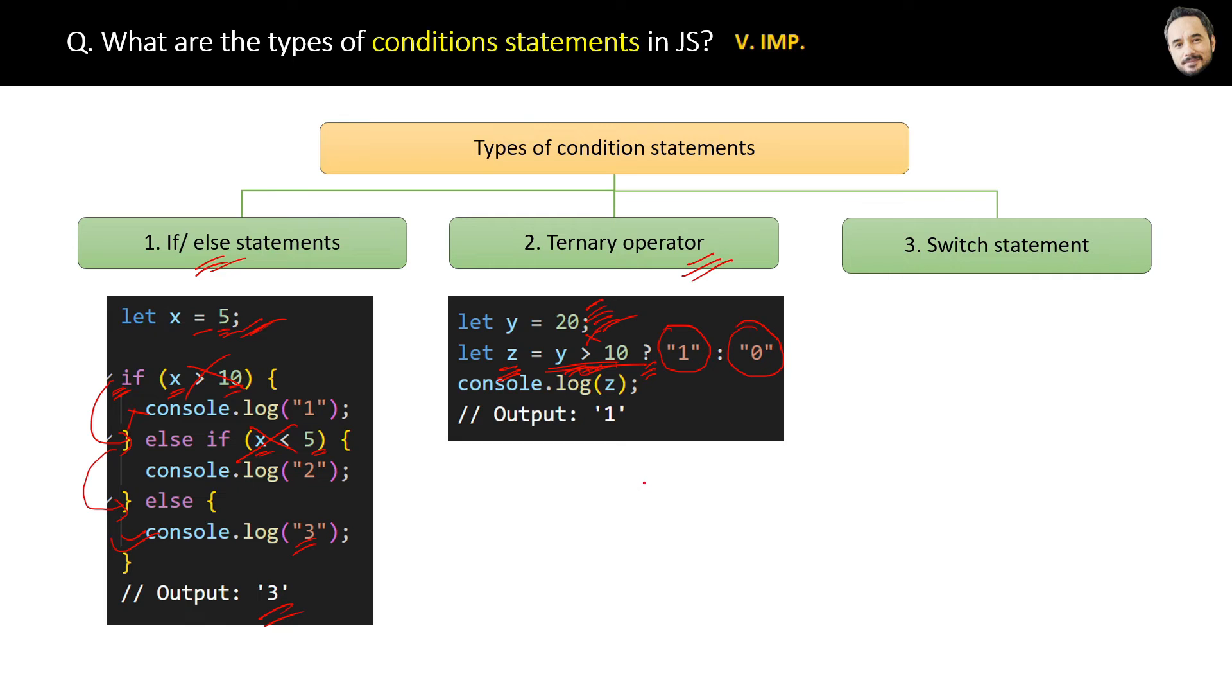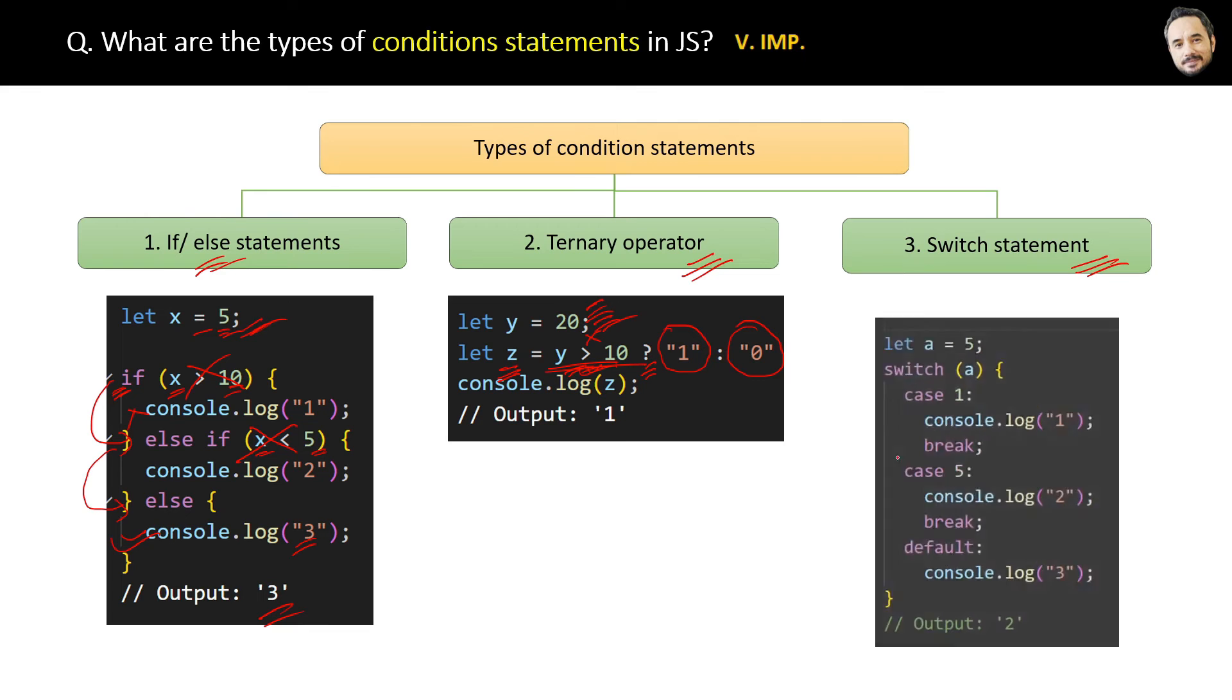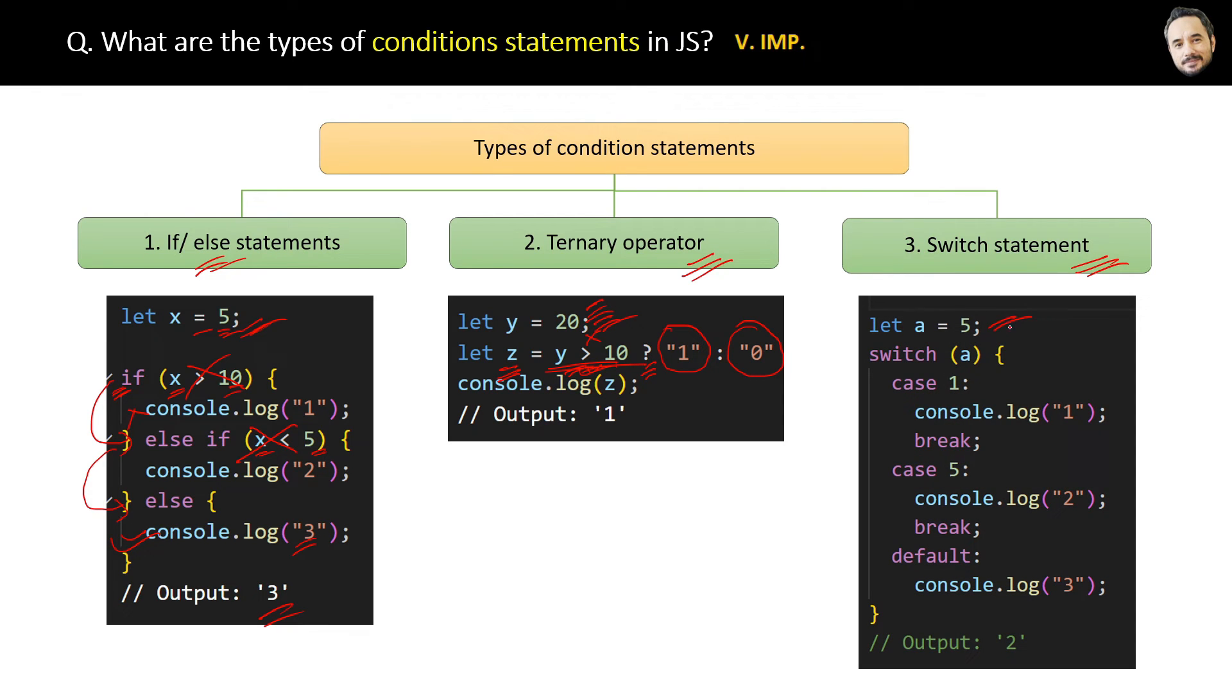...which is 0 will be the final value of z. That is a ternary operator. Then the third type of condition is the switch statement. Here you can see we have a variable a equal to 5. Now inside the switch statement, we will accept the a variable value like this and check it case by case.